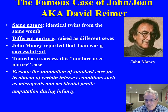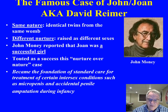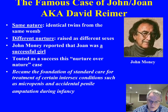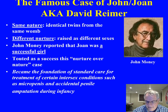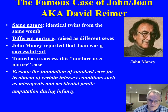But John Money, for reasons still unknown, didn't really pay as much attention as he should have to what was happening to the social adjustment of David Reimer. He believed he could make this genetic male into a female simply by having the parents constantly reinforce femaleness to the developing child.